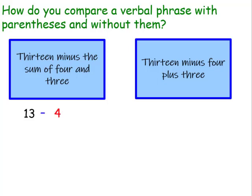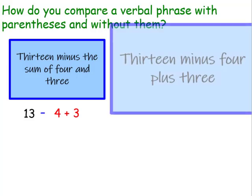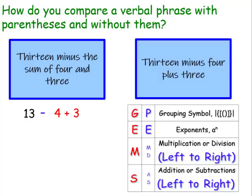In the next example: 13, and we're going to subtract the sum of four and three. This would not be written as 13 minus four plus three — that's just 13 minus four plus three. Order of operations tells us that if we use grouping symbols, we find the sum of four and three before we subtract, so we're going to have to use parentheses like so.